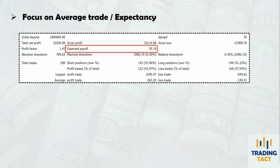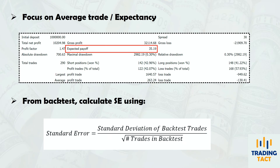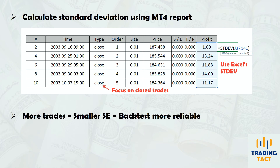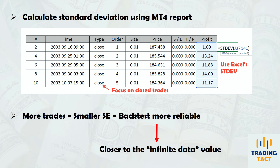Fortunately, standard error can be estimated using this simple formula. You can compute your standard deviation using your MT4 backtest report — simply export it to Excel and apply Excel's standard deviation formula to the list of profits from your individual trades. The more trades your backtest has, the smaller the standard error. A small standard error means your backtest expectancy will be close to the true value that you would obtain if you could backtest over infinite data.